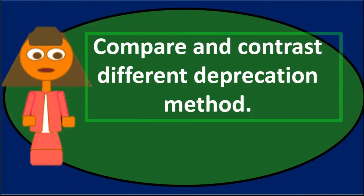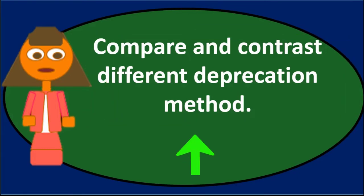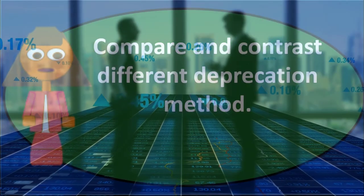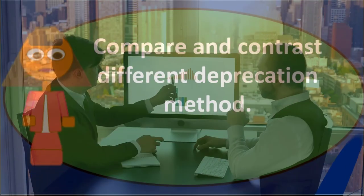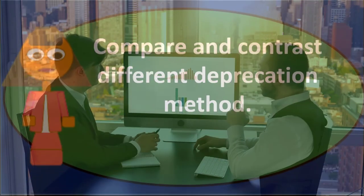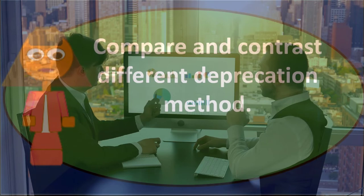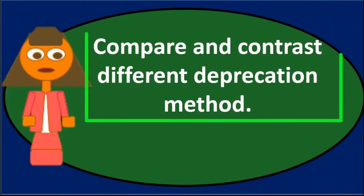And the most common method there would be the double declining balance method. And that's one in which we're basically going to take the straight line rate and double it. And in so doing, we'll front load the depreciation. So we'll take the book value, each year we'll take the book value, and then we'll multiply it down this double declining rate, which was double the straight line rate.